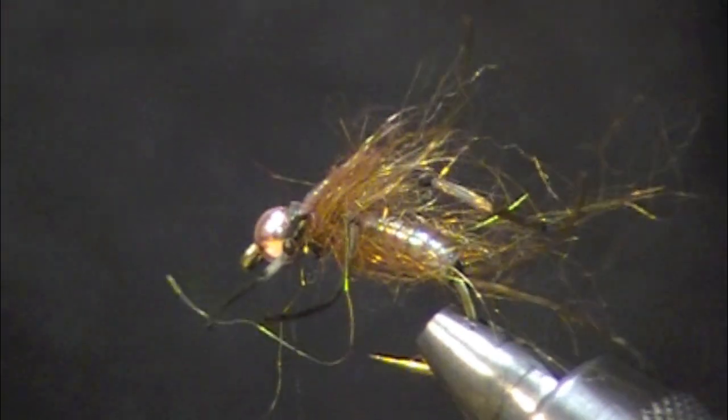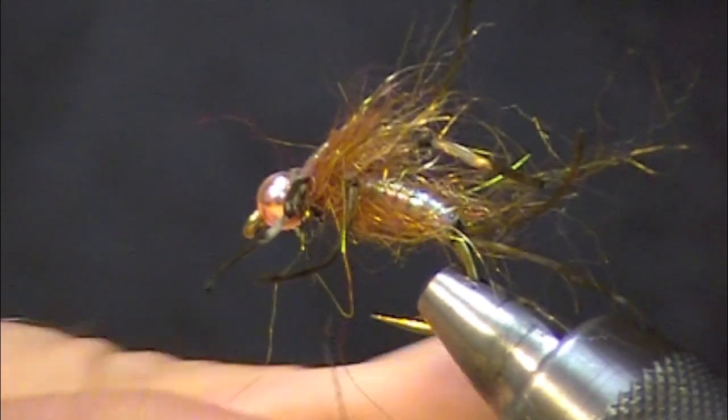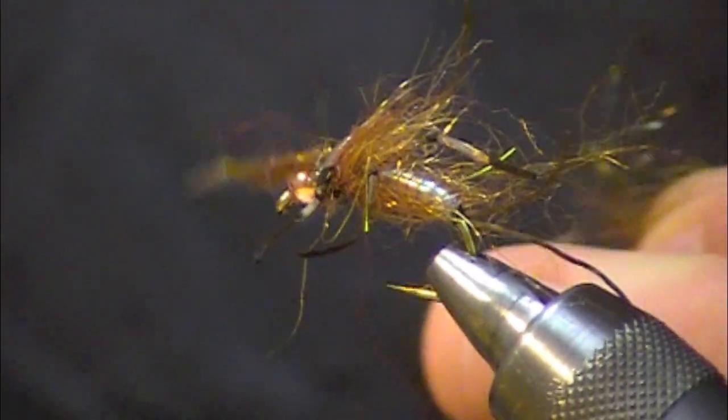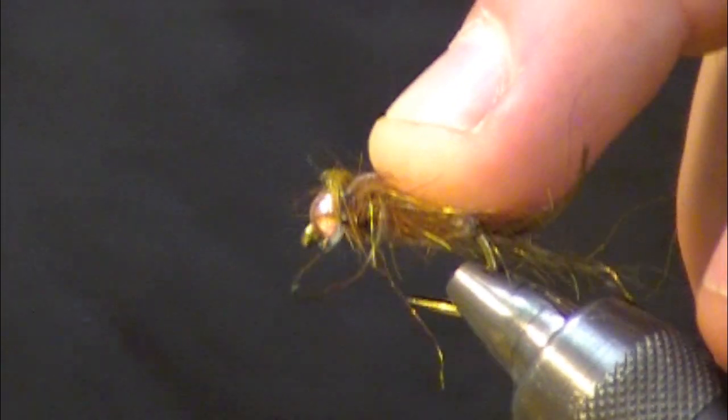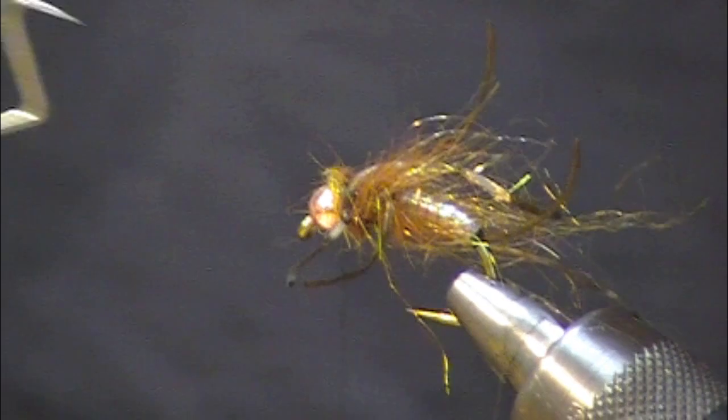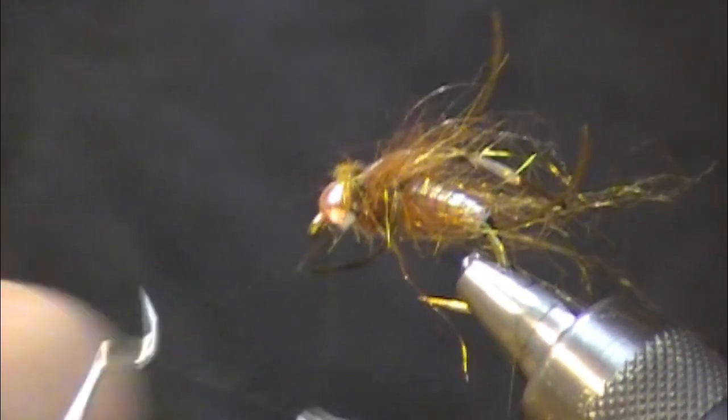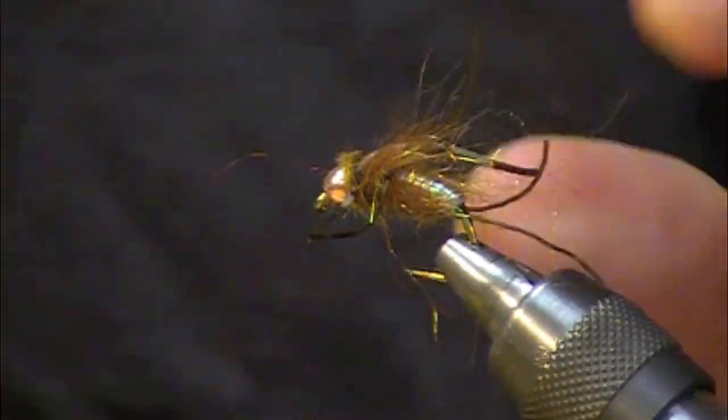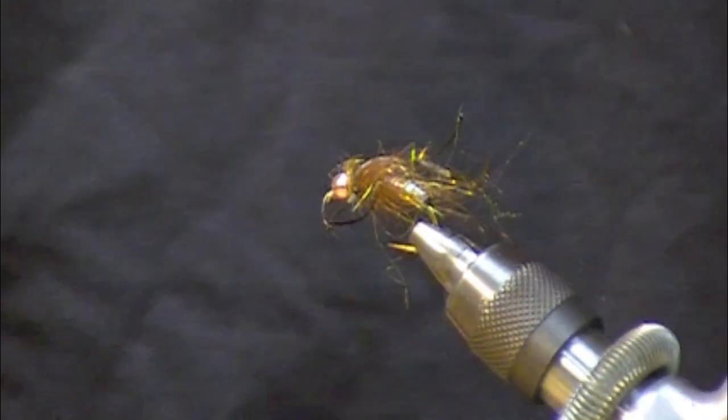To finish it off, give it a nice clean look, I'm just going to take a little tiny bit more of that SLF. I'm just going to finger roll that on, make a little tiny noodle. Whip finish up behind the bead. I'll pull maybe a little bit of that excess material off. It's pretty buggy in there.